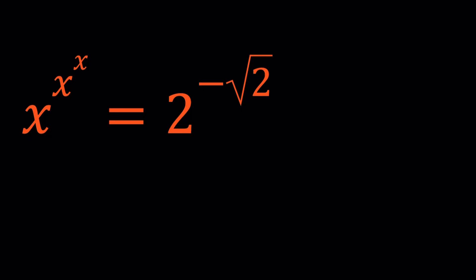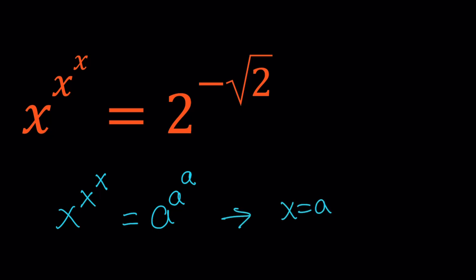We're going to take the number on the right hand side and manipulate it until we can make it look like the left hand side. We want to have an equality that looks like x to the power x to the power x equals a to the power a to the power a. If we can achieve that, then we can safely say that x equals a is a solution. This doesn't mean we found all the solutions, but let's go ahead and find a solution at least.